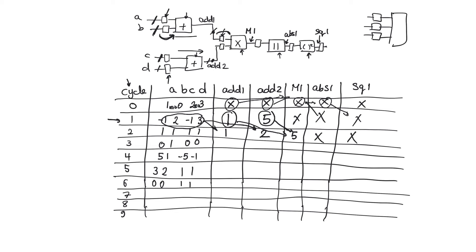On the third clock edge, the next inputs will become available to the adders, which will calculate two and two. The values that were the outputs of the adders on the previous cycle will pass the second column of registers and go to M1, which will calculate their product as two. The five from the multiplier will also cross its register and go to the absolute circuit, which will calculate the absolute value of five, which is five.